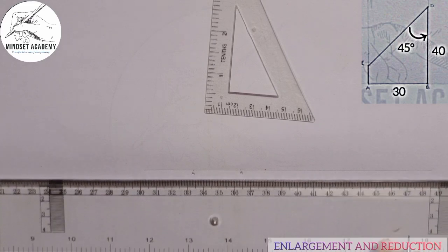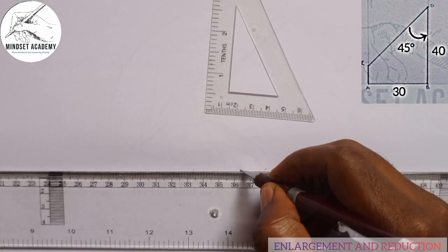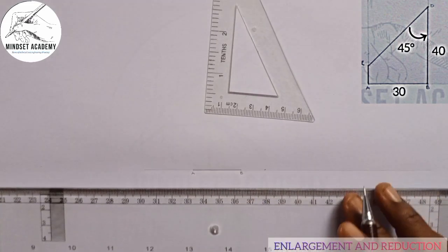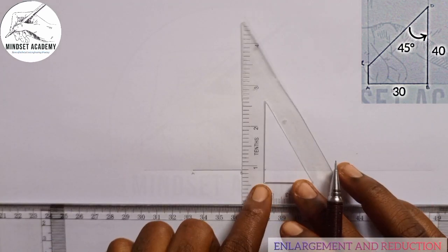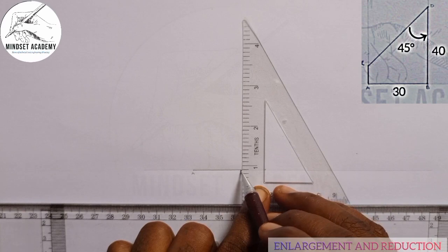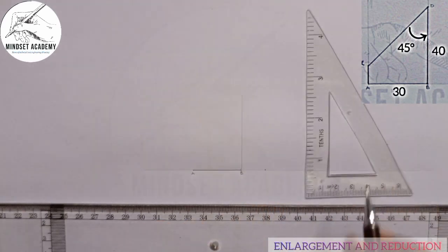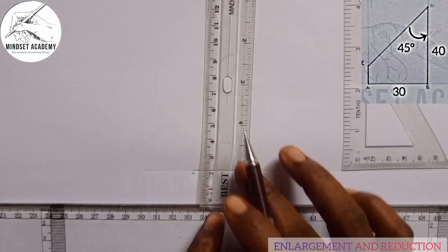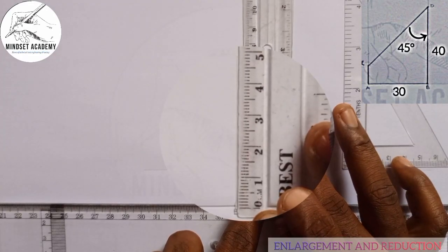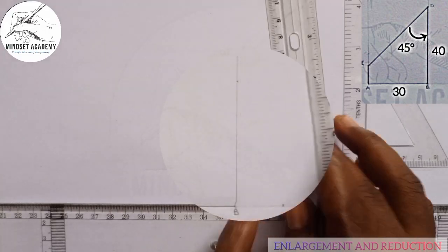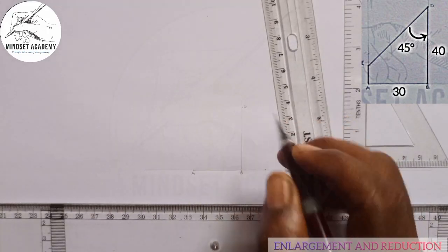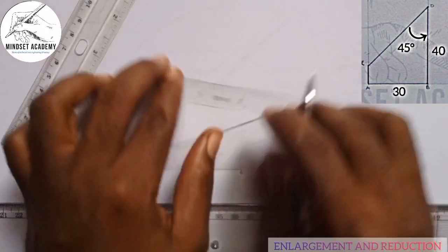I'm going to mark it from A to B. The next thing is from Point B to C — I'll draw a vertical line and measure 40 as the height of that figure.